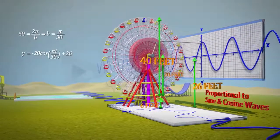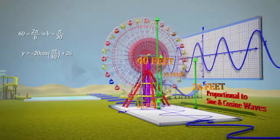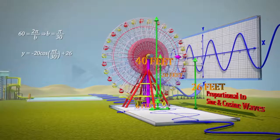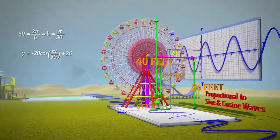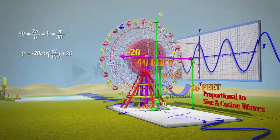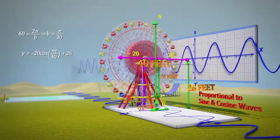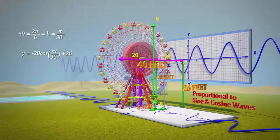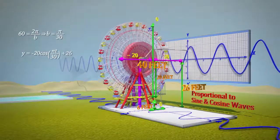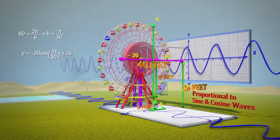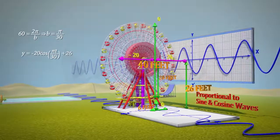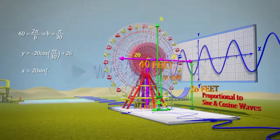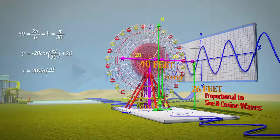The horizontal parameterization is found by noticing that the x values start at 0, go up to 20, go back to 0, then down to −20, and finally back to 0. This is a plus sine pattern with amplitude 20. The period is the same as with the vertical component. Thus, the horizontal parameterization is x = 20·sin(πt/30).